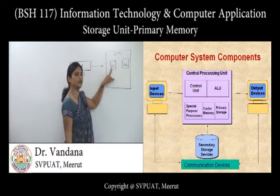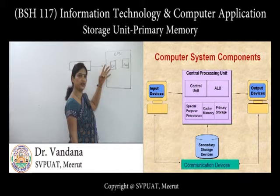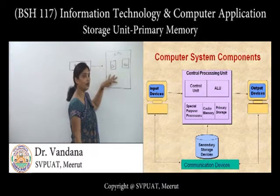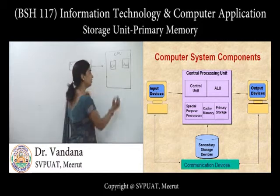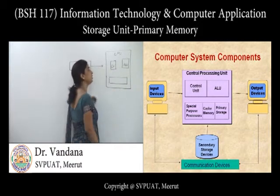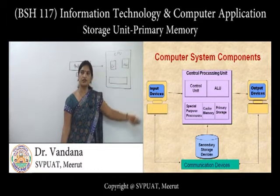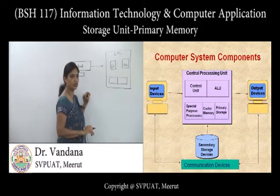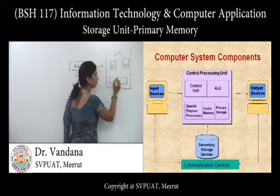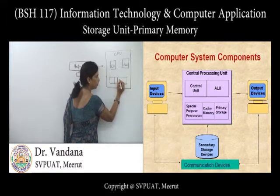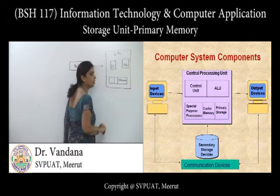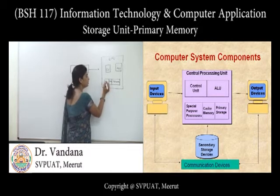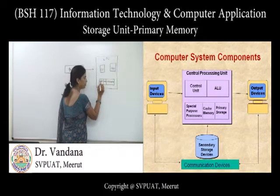The control unit is the nervous system of the computer; it controls all activities — from where input is accepted, whether data is sent to memory or to the arithmetic and logic unit, or after processing, whether information is handed over to an output device. Apart from the control unit and ALU, there are also memory, cache memory, and internal special-purpose processors or registers.